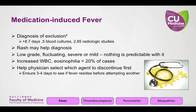Drug-induced fever is a diagnosis of exclusion, meaning all other likely causes have to be ruled out before declaring it drug-induced. This makes the workup far more expensive and labor intensive. Treatment is mainly focused on discontinuing one agent at a time to identify the cause. These patients don't always need to be admitted — this is often done on an outpatient basis, with the A&E selecting the most likely causative drug to discontinue, then following up with their primary care physician in three to four days.